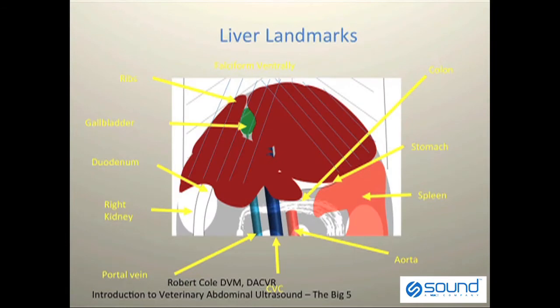This is a schematic of the liver, its general shape, and what organs will be adjacent to it. As we scan through the liver, keep in mind the overall anatomy — in particular, where the right kidney sits in its relationship to the papillary process of the caudate lobe of the liver, our spleen, our colon, and our major abdominal vessels.